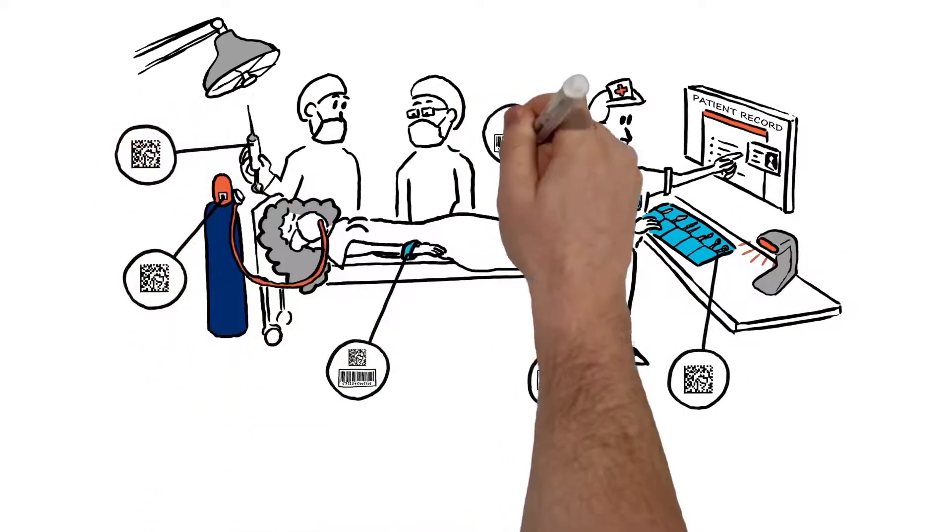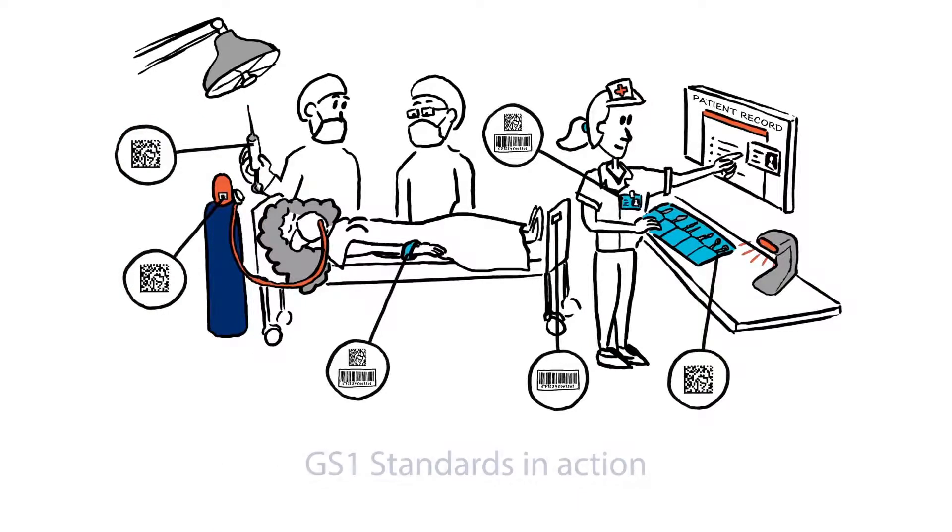The barcode contains important information, including a serial number, which is recorded on the patient record. This makes it possible to link a specific implant to a specific patient, increasing patient safety. It also means tracking the product is easy, especially in the case of safety recall, by using GS1 standards.